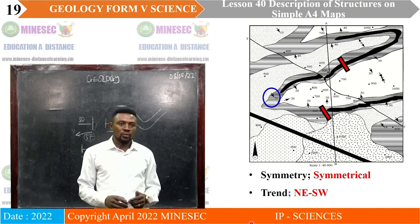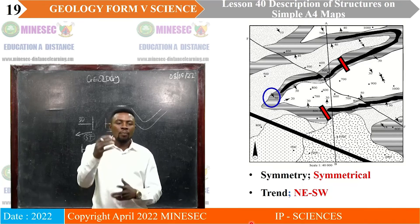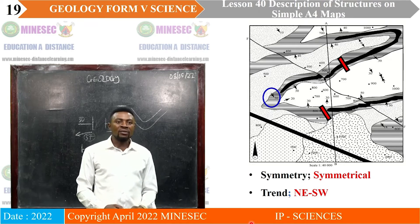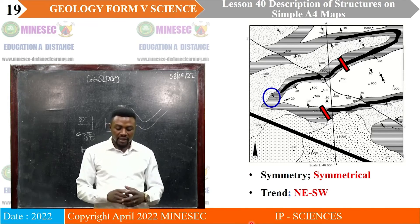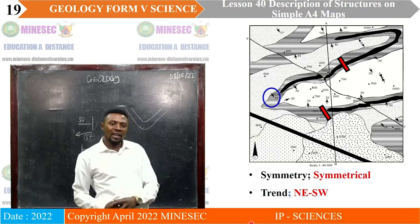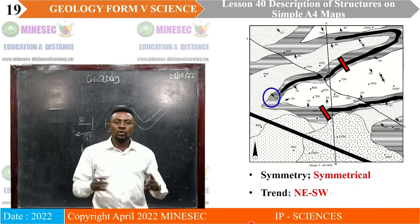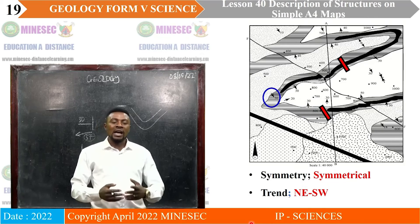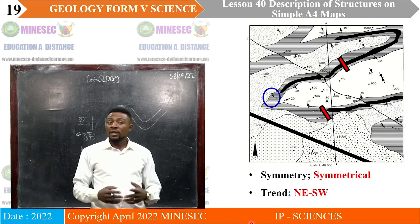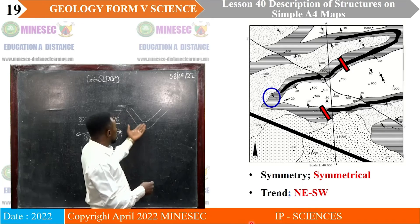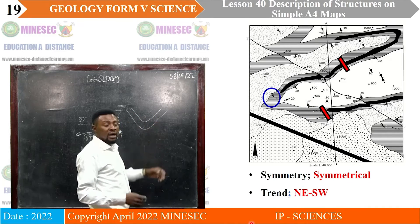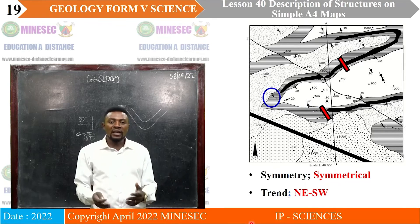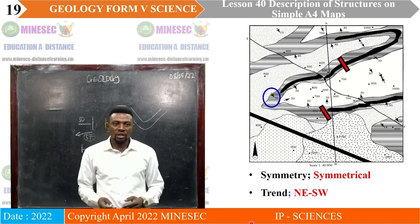We can also use the dip values. Taking an average of the dip values on both sides of the limbs — the dip amount on one side is 30 degrees, and on the other side it is also 30 degrees. So both limbs dip at 30 degrees, meaning no limb is steeper than the other — all limbs dip at the same amount. Therefore it is symmetrical.